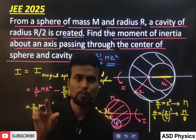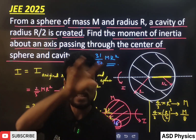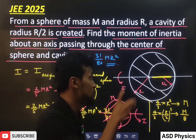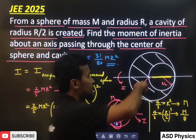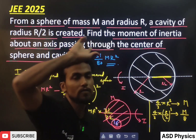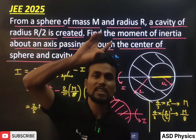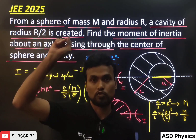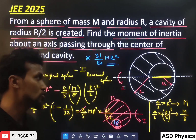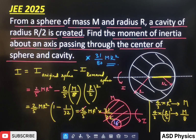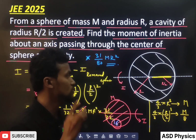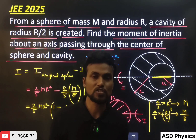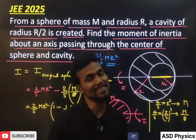I want to mention that before this question, a similar one used to appear for a disc. Instead of a solid sphere, they used to give a disc, and the answer used to be 13/32 MR². But in this question, instead of a disc, they have given a solid sphere — the basic approach was all the same. I hope you understood this very well. Keep studying, keep going.